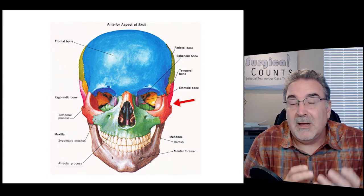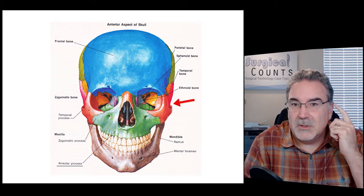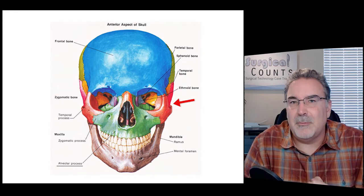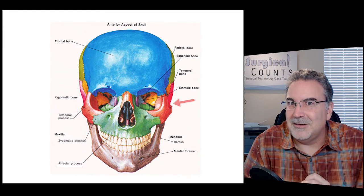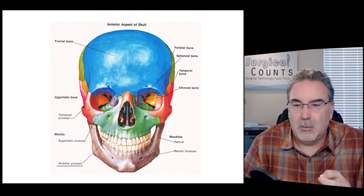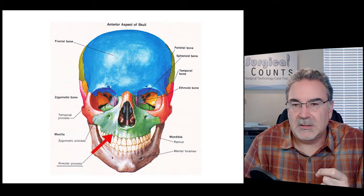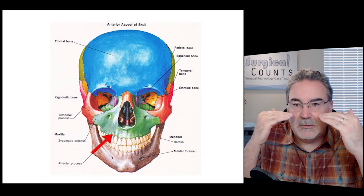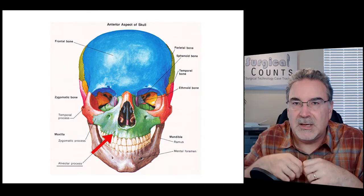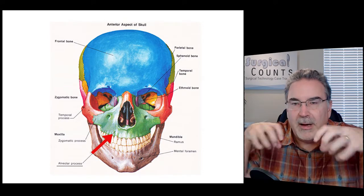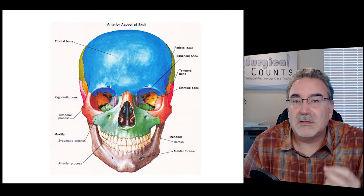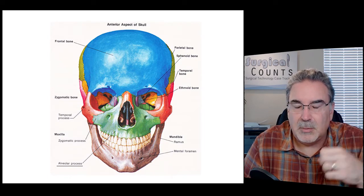We also have a zygomatic process of the temporal bone — the bone on the side of the skull that reaches into the zygomatic bone from the other direction, not to be confused with the other. Another process of the maxilla bone is known as the alveolar process, which is an extension of the maxilla bone that goes down around the teeth and holds them in place. That's why it's known as a process — the alveolar process of the maxilla bone is what holds the teeth in place.